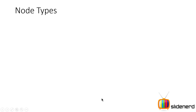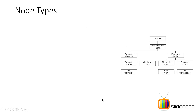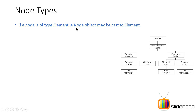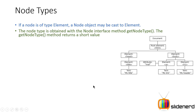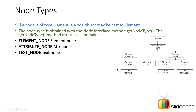Now let's talk about node types. There are different types of nodes. Looking at an XML document structure, there's an element node, and there's a text node which contains only text and nothing else. If a node is of type element, then a Node object may be cast to Element. Most of them are element nodes — root element and others. You can get the type of a particular node by calling getNodeType().